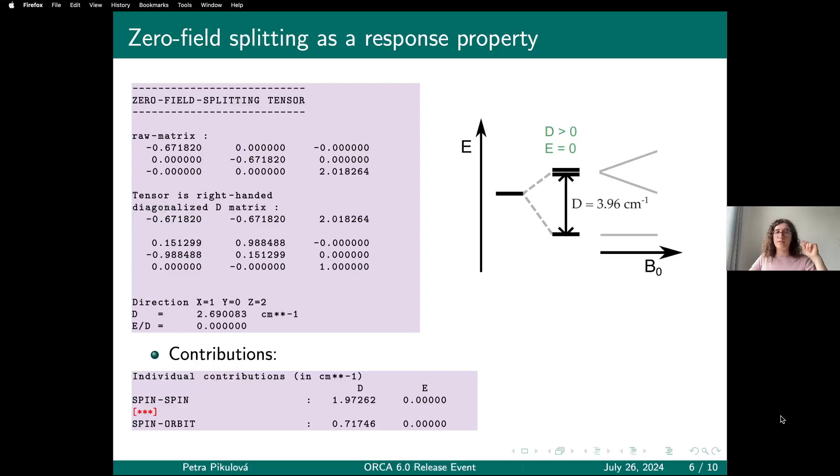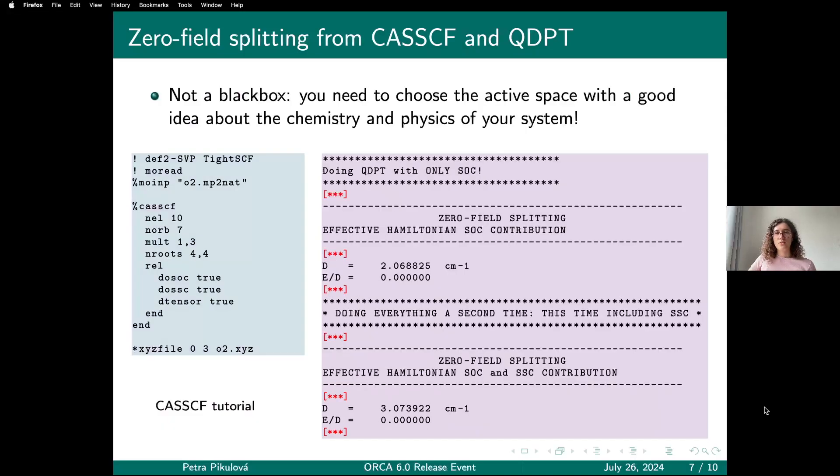The output will give the zero-field splitting tensor, the matrix eigenvalues, eigenvectors, the D and E over D parameters that you might be interested in comparing with experiment. You can see it's not completely unreasonably off the experiment—at least it has the same sign. The program will print the contributions to the total value. In oxygen, both the spin-spin and spin-orbit terms are kind of the same order of magnitude, and that's why I picked this system.